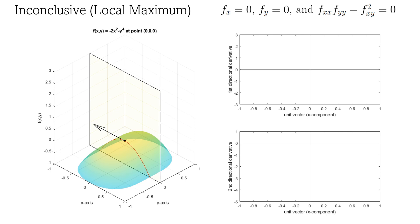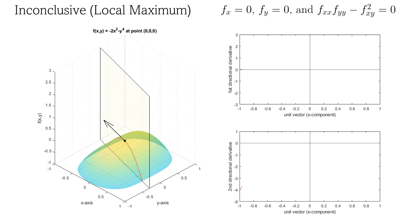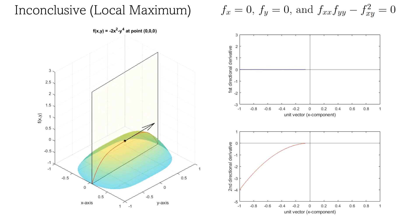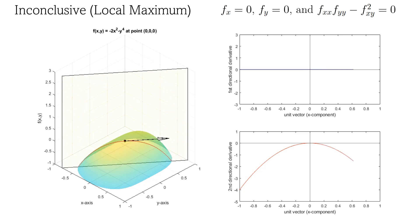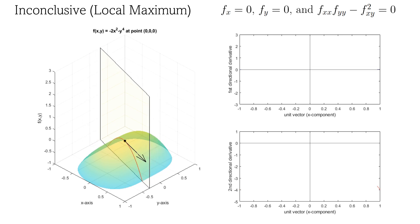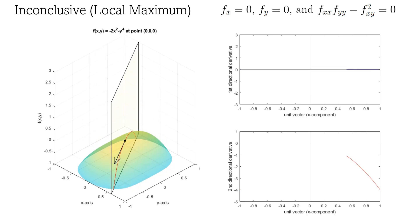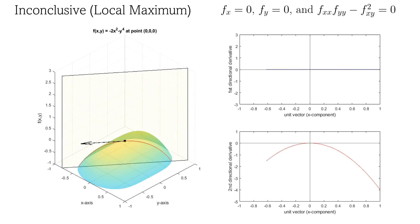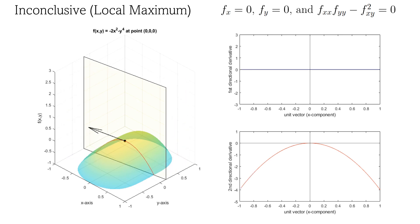Now we will look at a case where the second derivative test is inconclusive for an extreme value, a local maximum to be precise. The test is inconclusive for the same reasons discussed in the last example. Once again, the directional derivative is always 0. In this case, the concavity is nearly always negative, except at a single value where the concavity is 0. These last two examples have shown that very similar-looking directional curvature graphs can indicate vastly different surfaces when the discriminant is equal to 0.